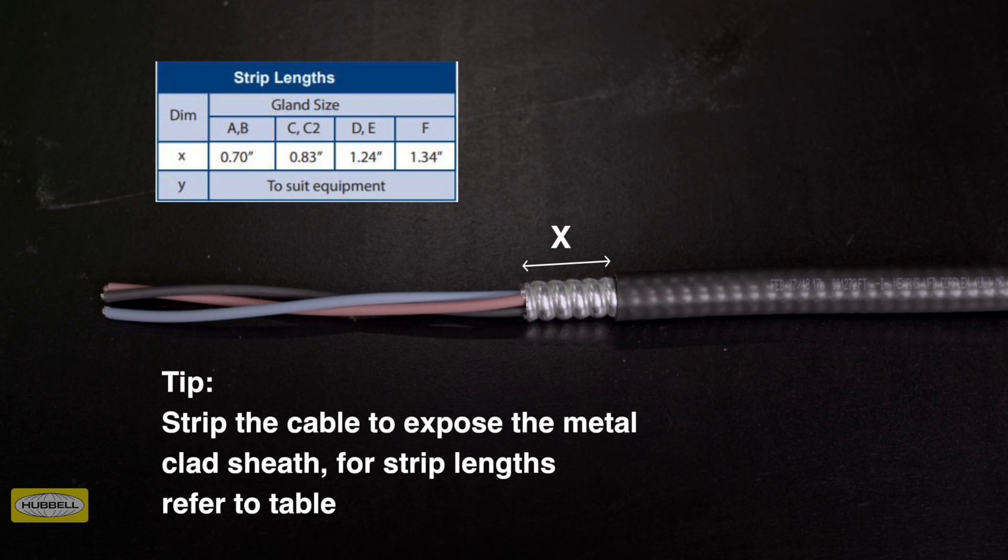Remove a further 0.7 inches of metal clad sheath for cable glands A to B size, 0.83 inches for C to C2 size, 1.24 inches for D to E size, and 1.34 inches for F size.